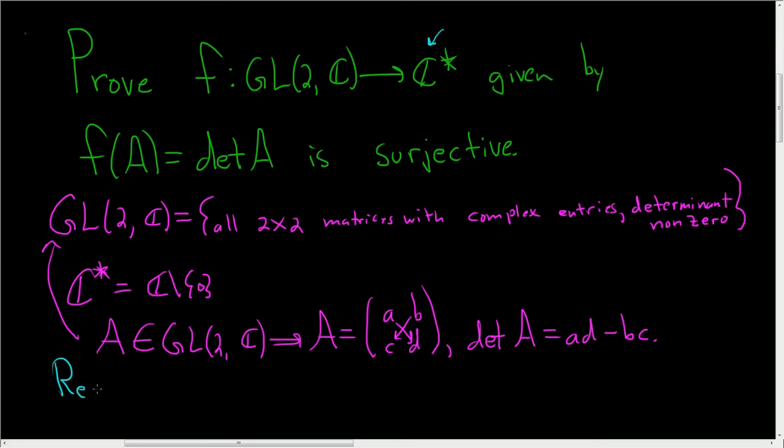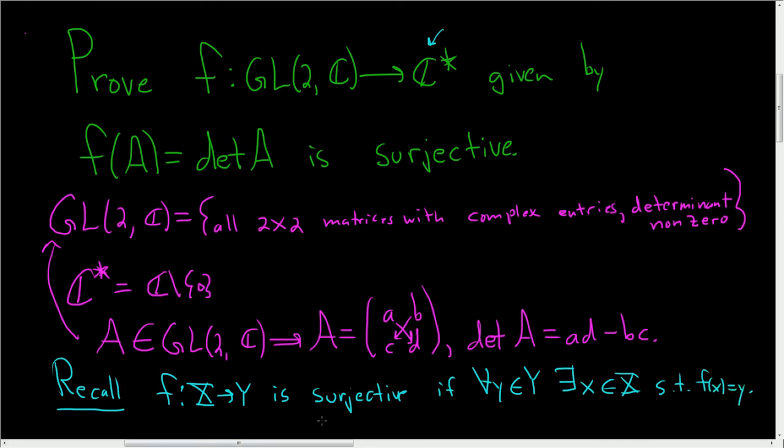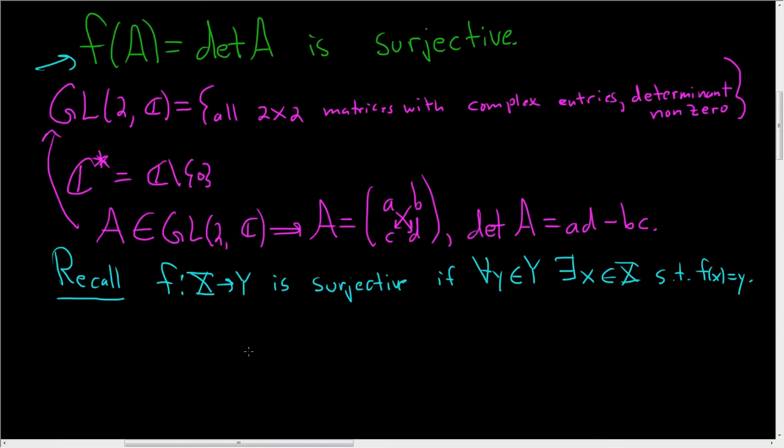So recall, let me give you the definition quickly. F from capital X to capital Y is surjective if for all of the y's in capital Y (the codomain), there is a value x in the domain such that F(x) is equal to y. So we have to use this definition to prove that this function is surjective. Let's go ahead and do it.